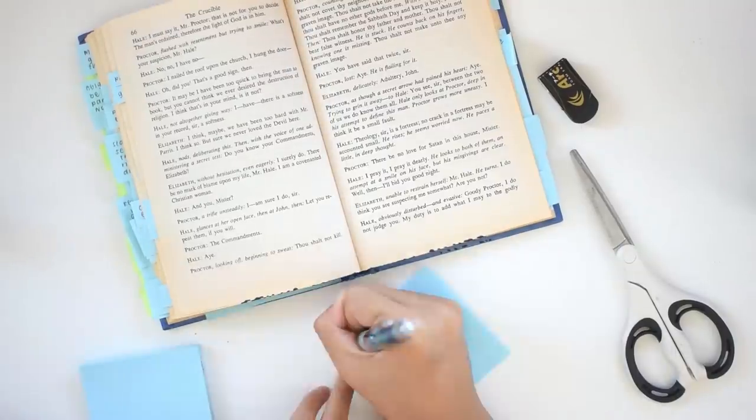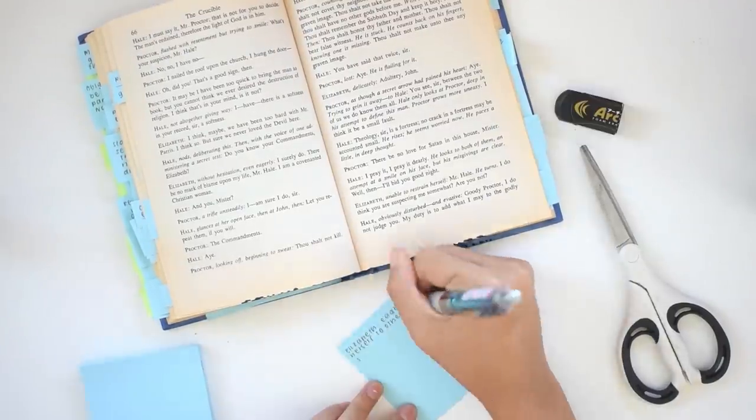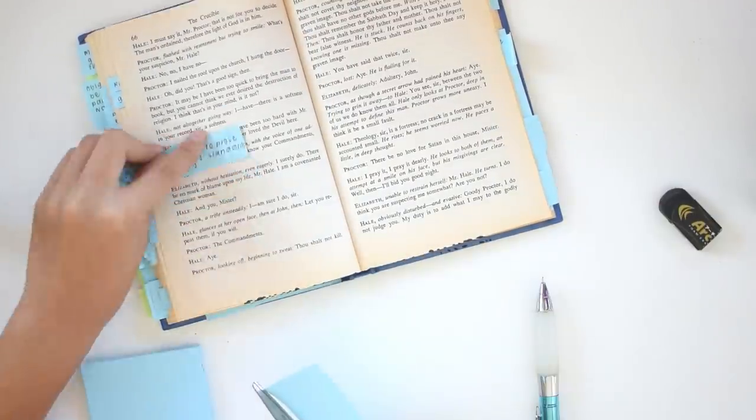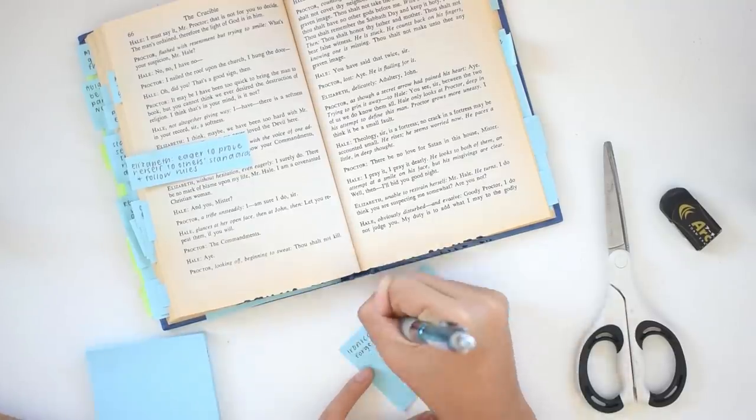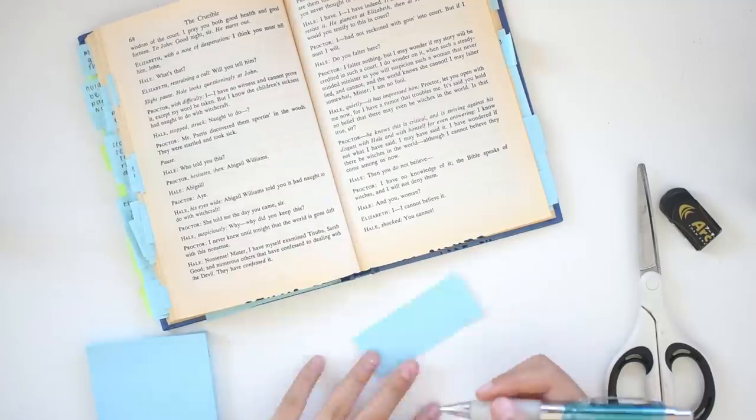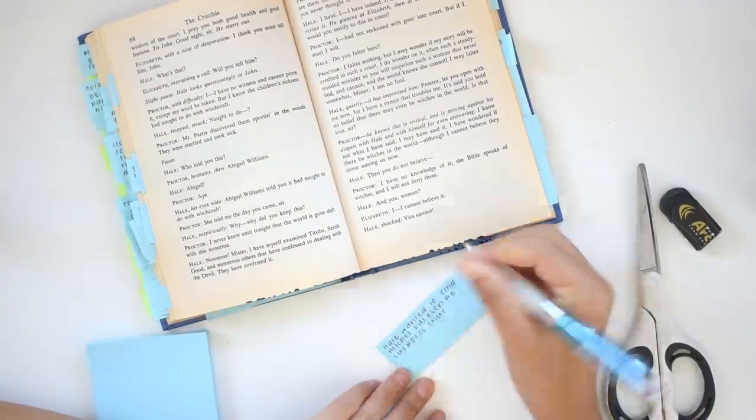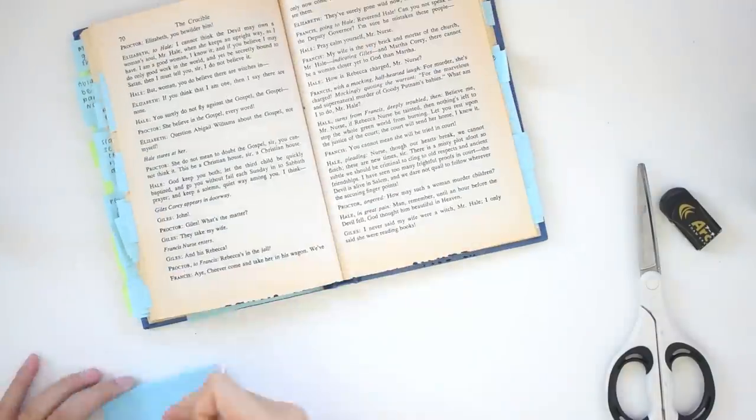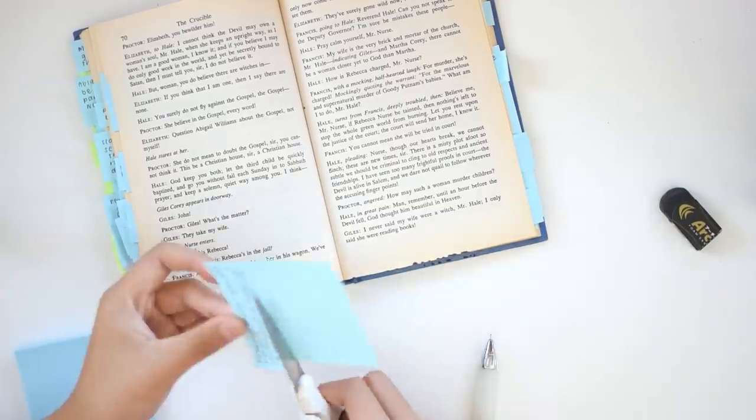The way I do my annotations is on post-it notes, so I'll write them on the post-it note, and then I cut the post-it note so that only the part with the text is there, and I stick it on to the spot that aligns with the text that I want to annotate.